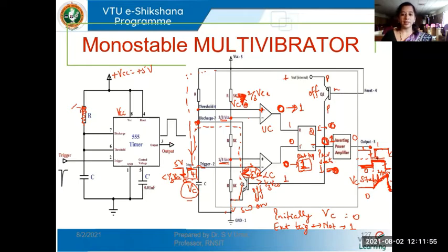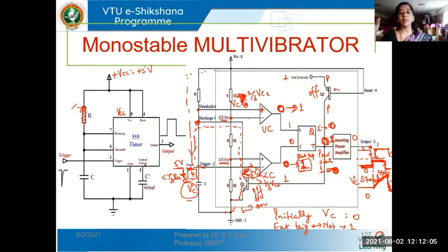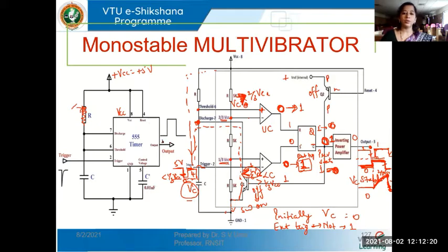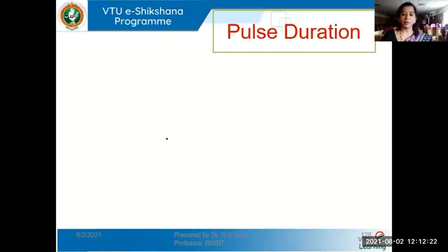This stable state will be maintained until the next trigger pulse is applied. Only when a second trigger pulse is given will the output change from zero to one again, and the entire capacitor charging and discharging cycle will repeat. For every input trigger pulse, the output changes from zero to one once, remains in the one state for a fixed time duration determined by R and C, and then comes down on its own to the stable zero state.